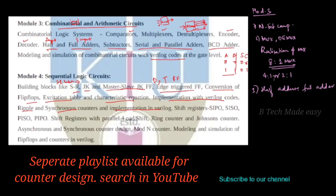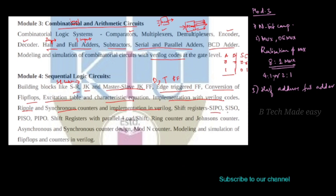We also have shift registers. Shift registers are of four types: SIPO — serial in parallel out; serial in serial out; parallel in serial out; and parallel in parallel out. We will learn about these shift register types.